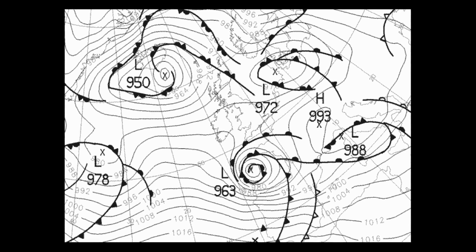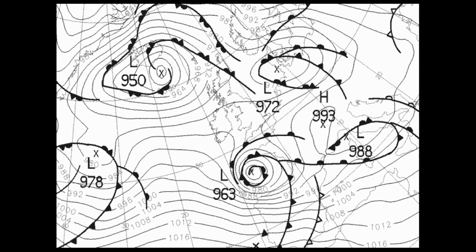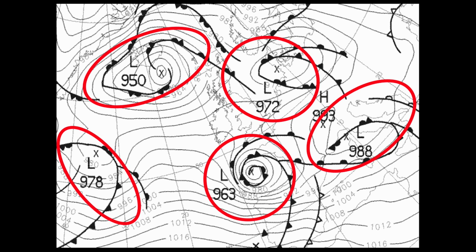Due to the Earth's rotation, the air flowing in towards the centre of the depression doesn't blow directly towards it — it actually flows around the depression in an anti-clockwise spiral, gradually flowing in towards the centre. The winds around a depression blow in an anti-clockwise direction in the Northern Hemisphere. Here is a weather map from January 2009 showing a number of different depressions and the pressure gradient around them.